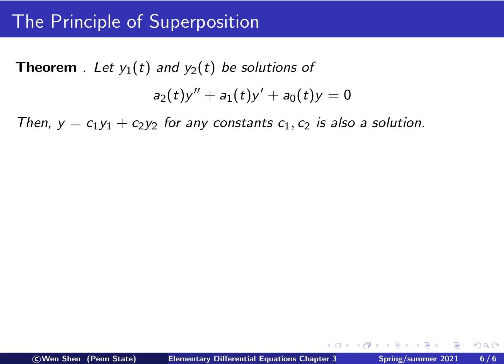Let's formalize this as a theorem. If y1 and y2 are two solutions to the linear homogeneous equation, then their linear combination y = c1·y1 + c2·y2 is also a solution, for any constants c1 and c2. Here a2, a1, a0 are allowed to be functions of t.